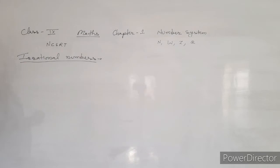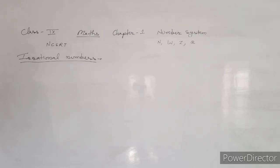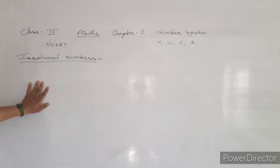Natural numbers start from 1, 2, 3 — there are no decimal numbers. Whole numbers are formed when we include 0 in natural numbers. Integers are formed when we include negative numbers like -1, -2, -3 in whole numbers. Rational numbers are numbers that can be expressed in the form p upon q, and they are represented by Q.